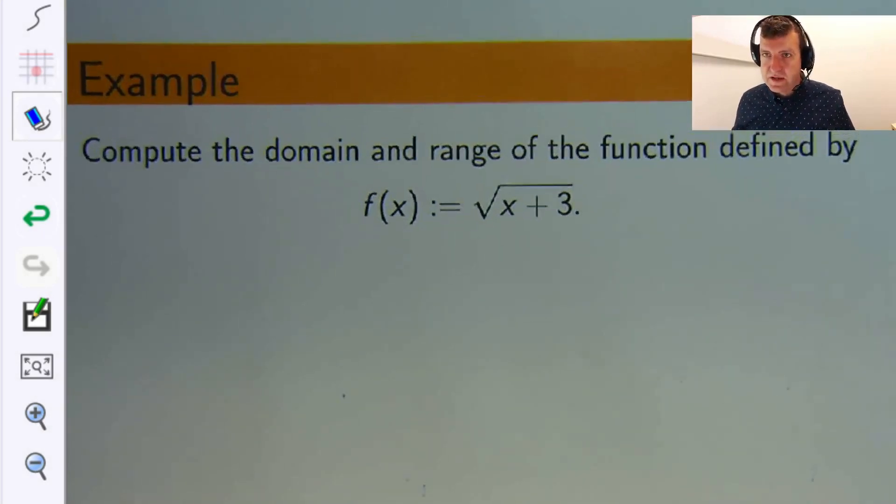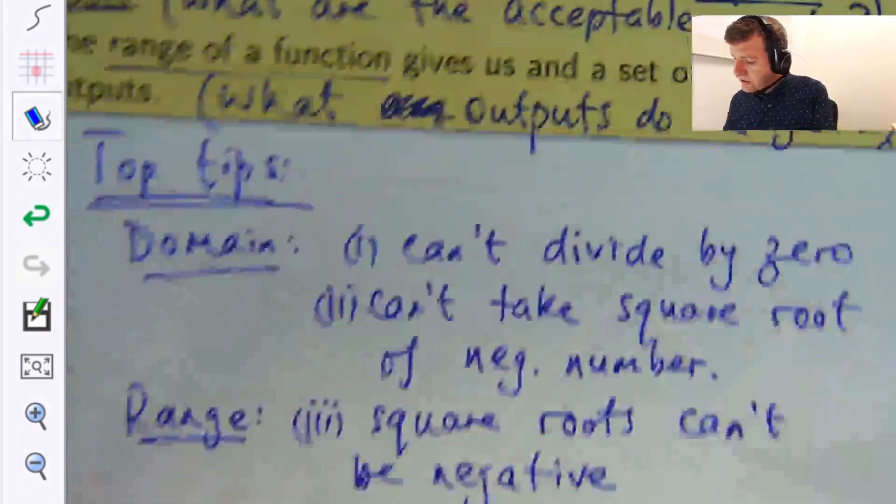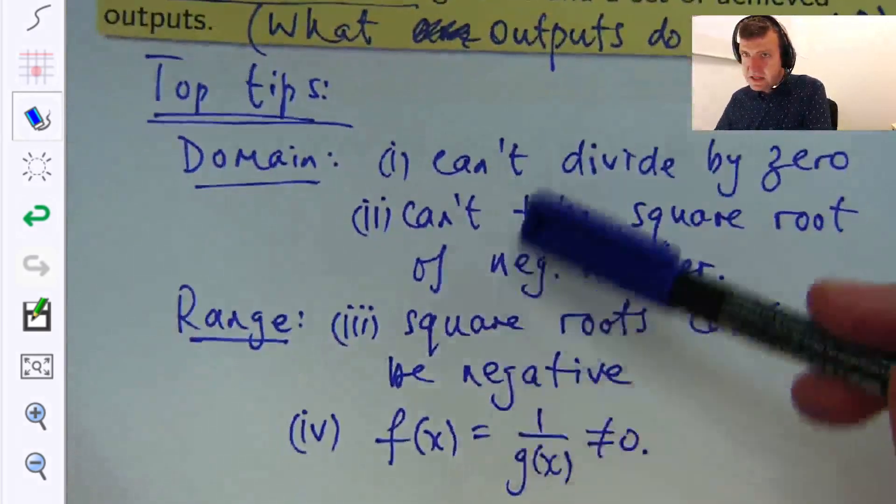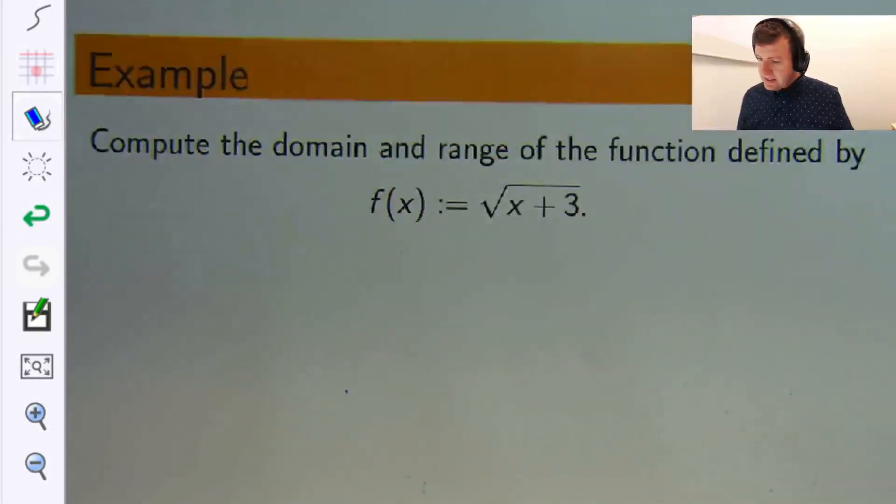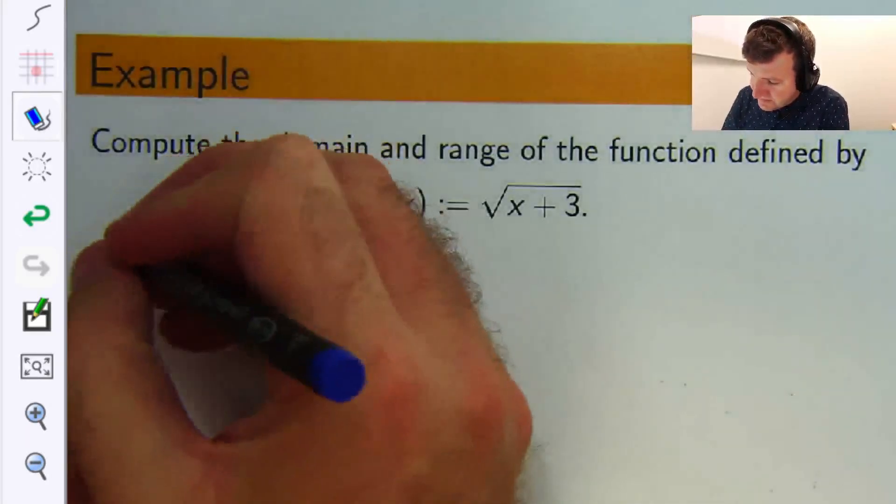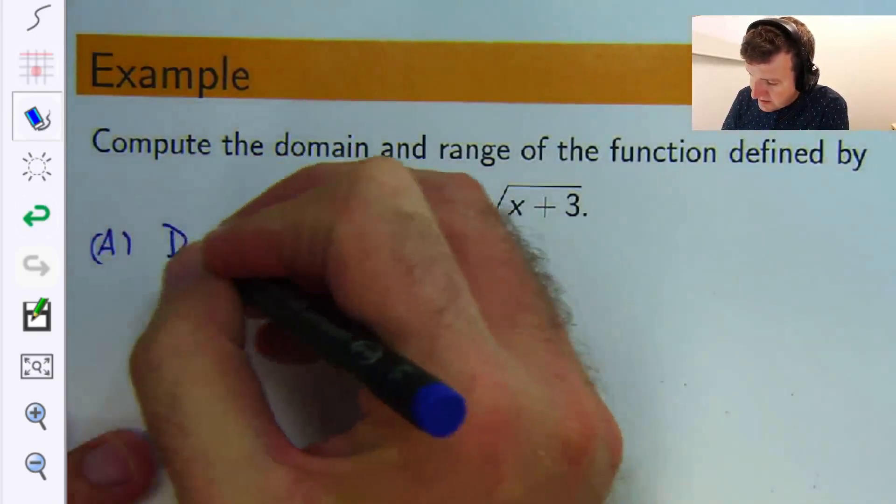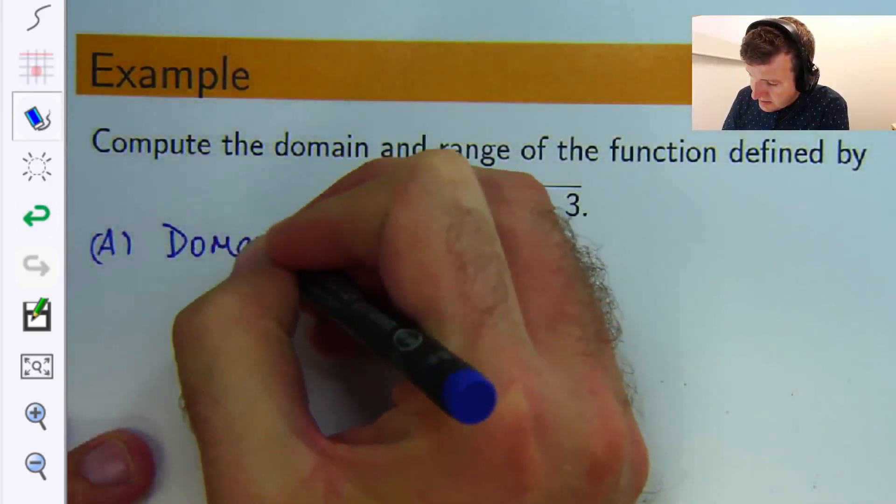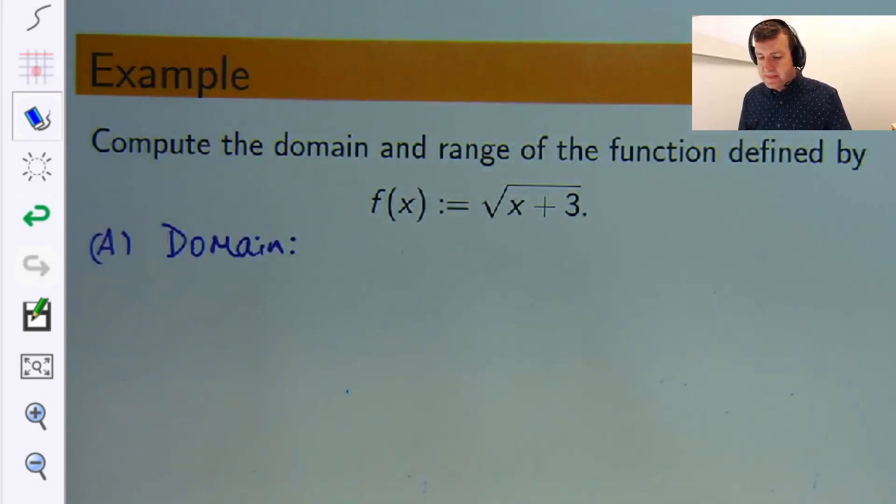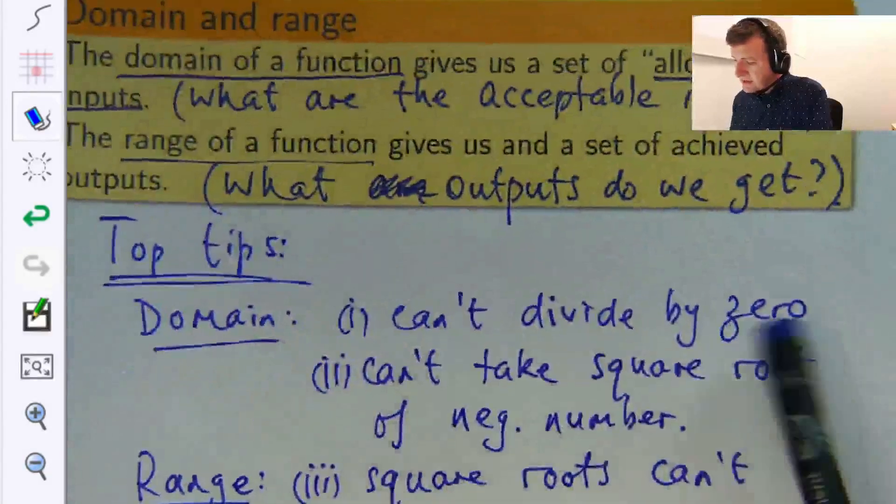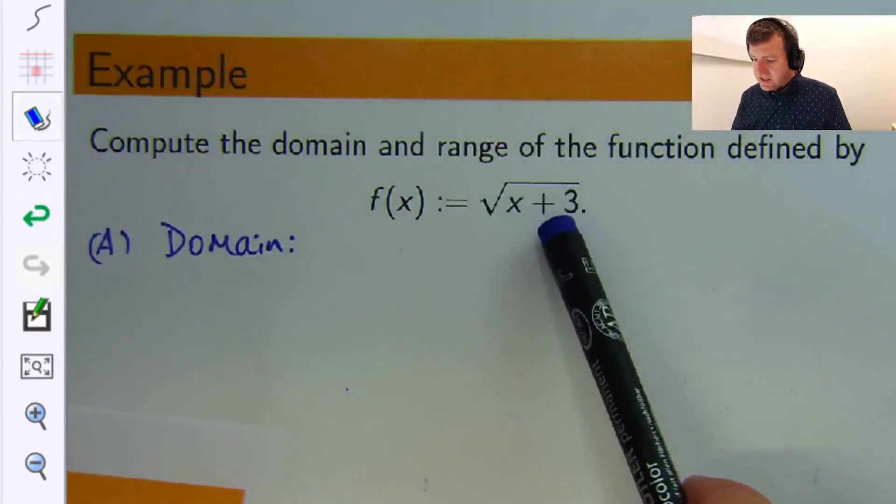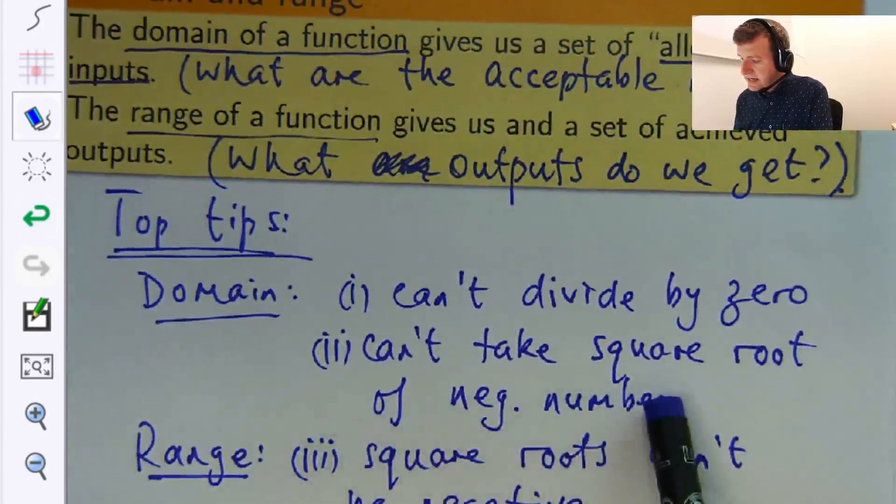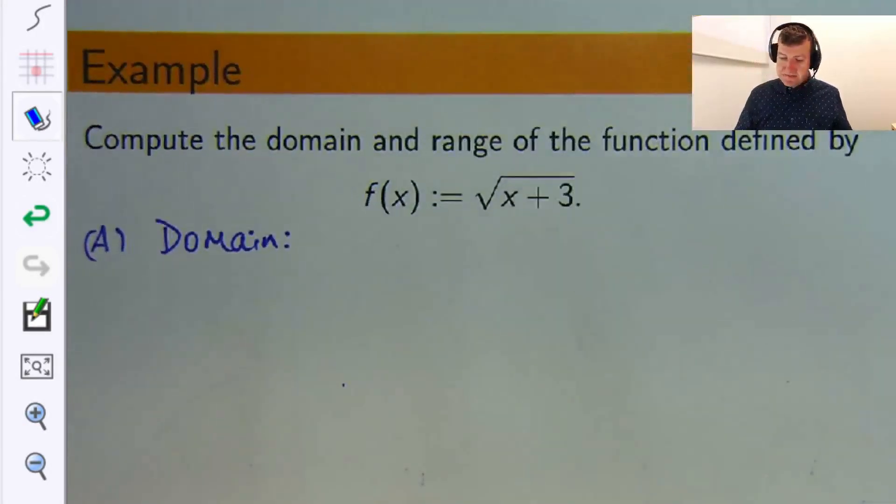So how do we do it? Well, we're going to use some of these top tips. Can we see anything? Well, let's work with the domain first. We can't divide by zero. If we look at our function, there's no division there. Can't take the square root of a negative number. Well, this is a function where there's a square root in it. So I think we can work with that.